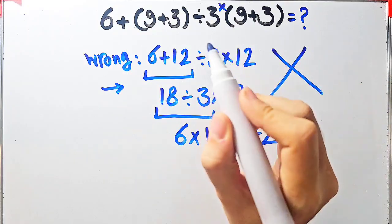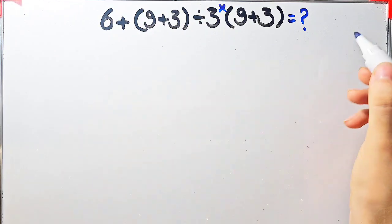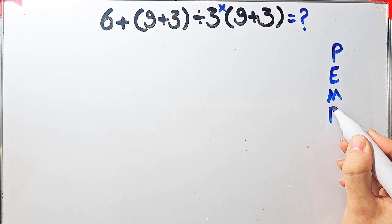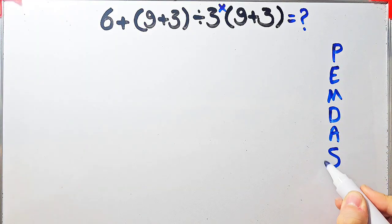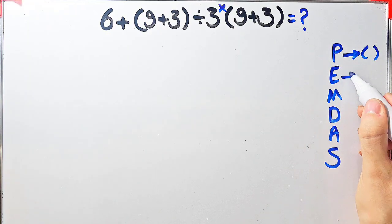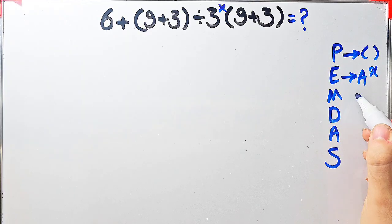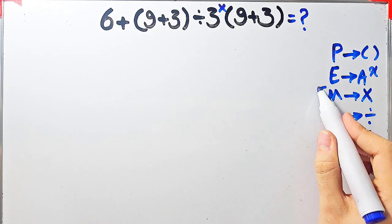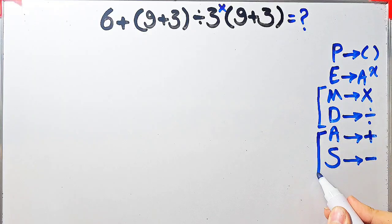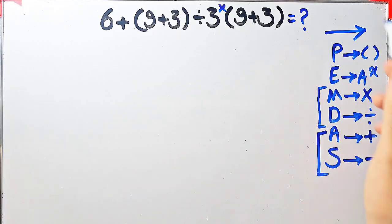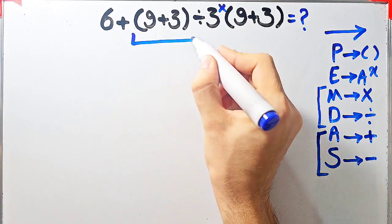Let's solve this question step by step. To solve it, we need to follow the order of operations, which is PEMDAS. PEMDAS shows the priority of mathematical operations: P stands for parenthesis, E for exponent, M for multiplication, D for division, A for addition, and S for subtraction. Multiplication and division have the same priority level, as do addition and subtraction — when both appear, we simplify from left to right.